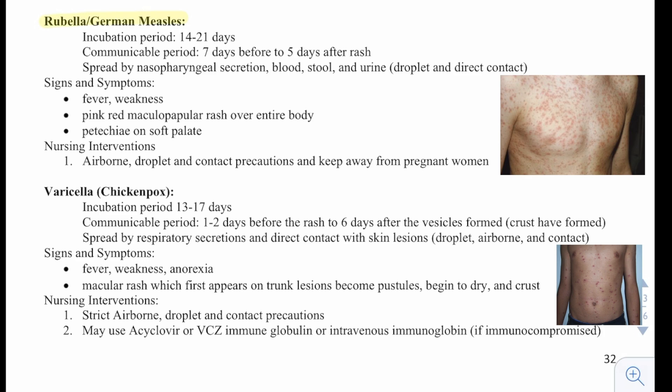Then we have varicella, or chicken pox. The incubation period is 13 to 17 days, with a communicable period of one to two days before the rash to six days after the vesicles have formed and crusts have formed. It is spread by respiratory secretions and direct contact with skin lesions, so droplet, airborne, and contact precautions.